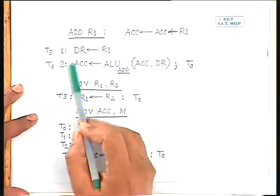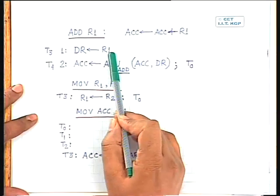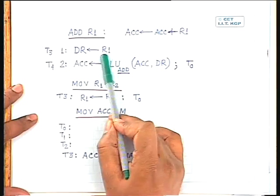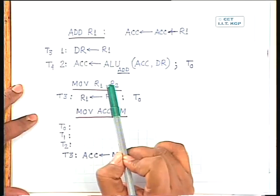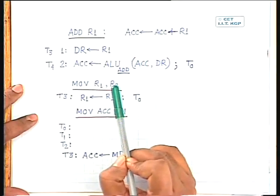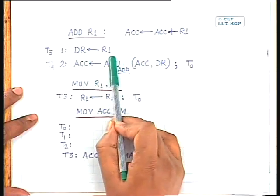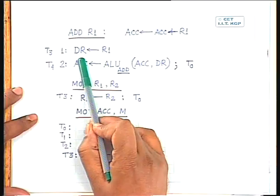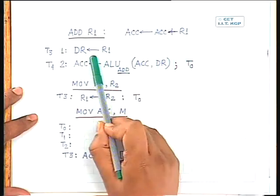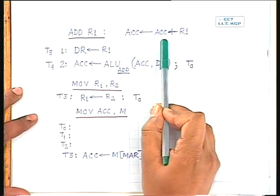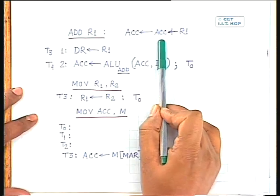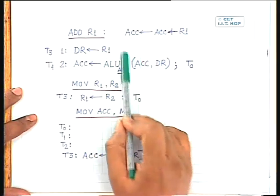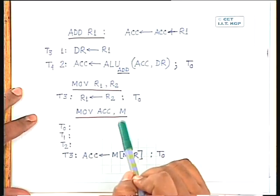For ADD R1, during T3, the content of R1 must be transferred to the data register, because as per our CPU architecture, addition directly on R1 is not possible — R1 does not provide input to the ALU. The ALU gets input from the data register. So for ADD R1, data from R1 must be transferred to the data register. After that, the data register content is added with the accumulator, and the result is loaded back into the accumulator.